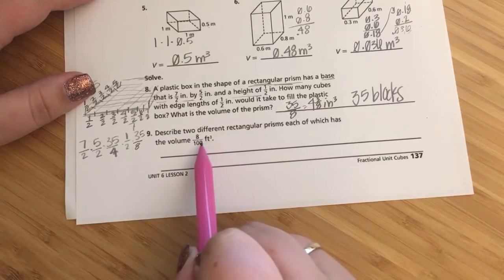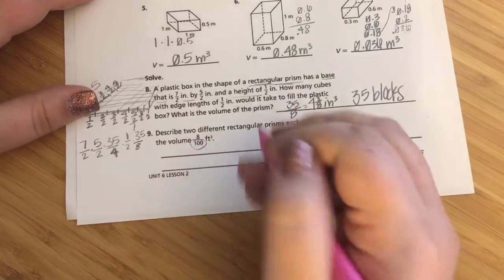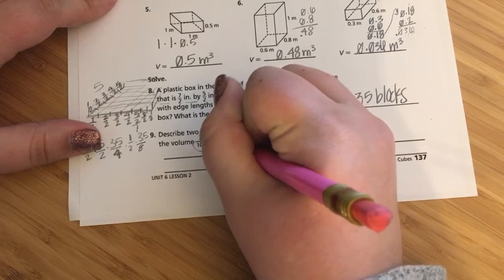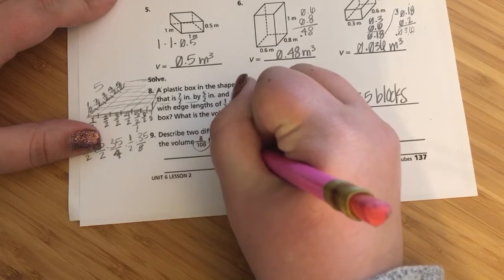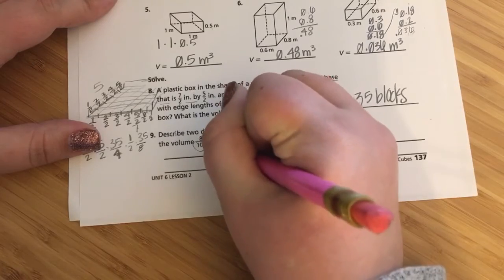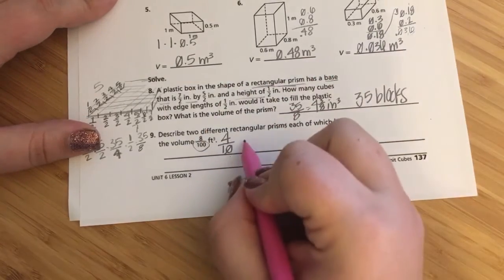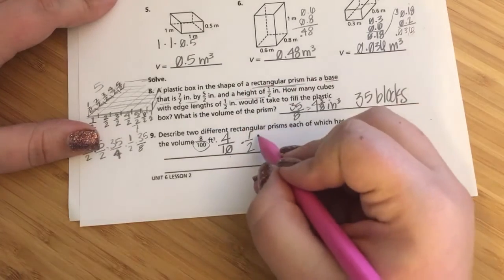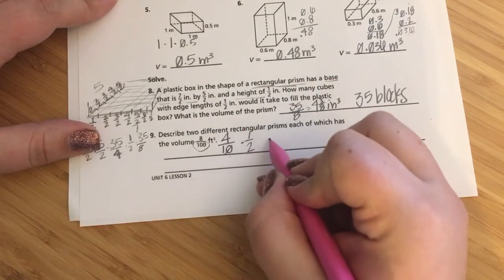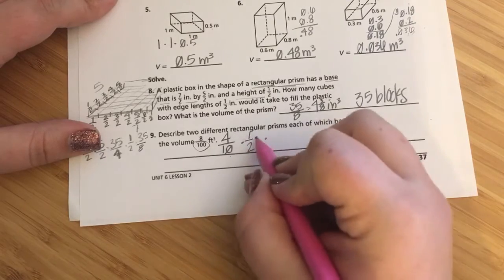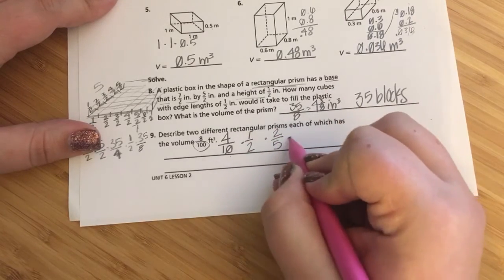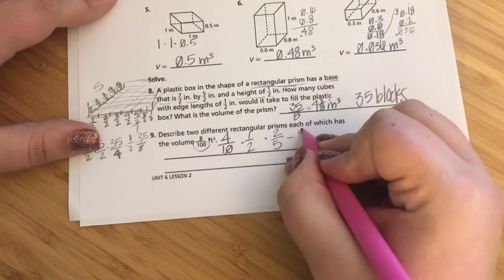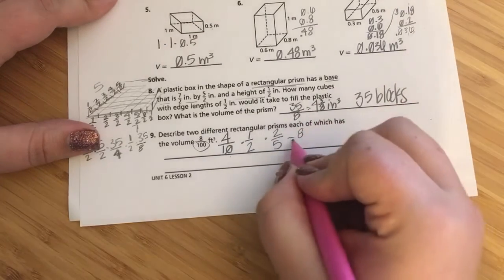So, now I need to think of a length times width times height combination that could equal 8 over 100. Now, there are many possible answers, these are just the ones I came up with. You may agree with them, you might have your own, that's great too. So, if I have 4 tenths multiplied by 1 half, because that would give me 4 over 20. So, to get from 4 to 8, I'd have to multiply by 2, and 20 to 100, I'd get 5. So, then I'd get a total of 8 over 100, which is what the set has to be.